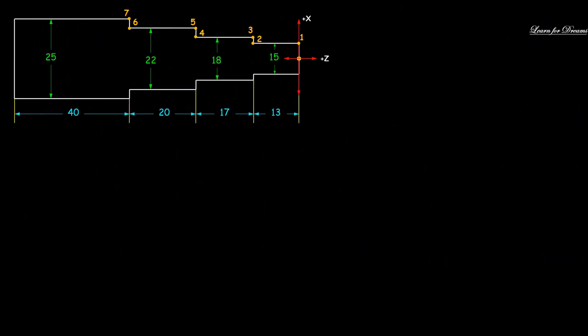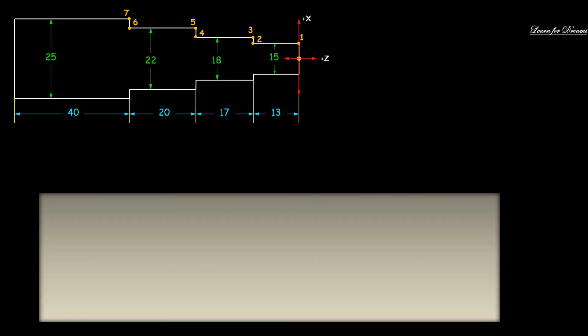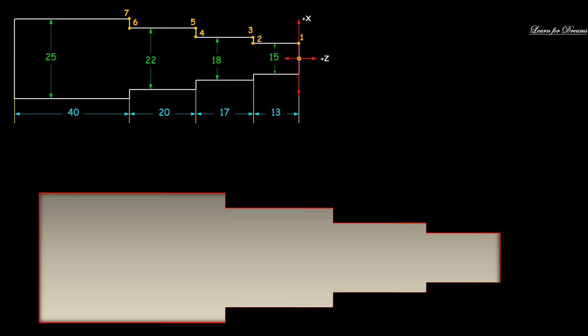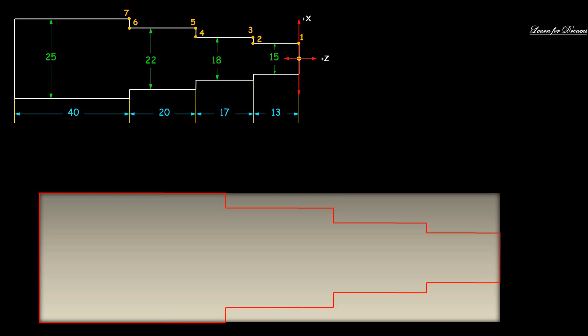Now we will see a 2D simulation. This is the given workpiece and this is the layout which we want, so we need to remove this part. The depth of cut we will keep is 0.5 mm, so 1 mm of material will be removed from the entire diameter in one stroke.